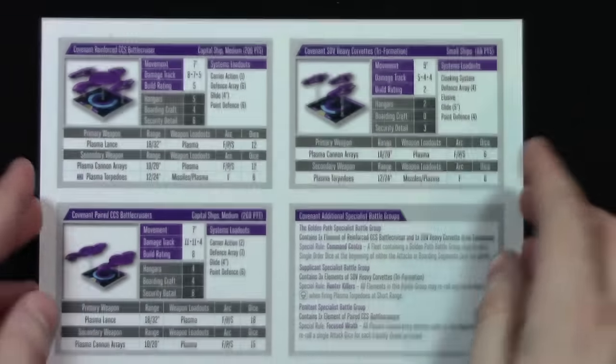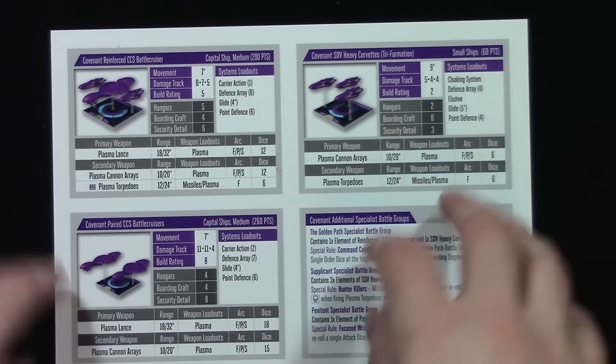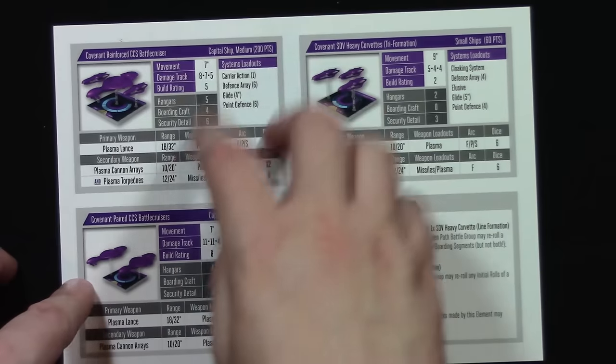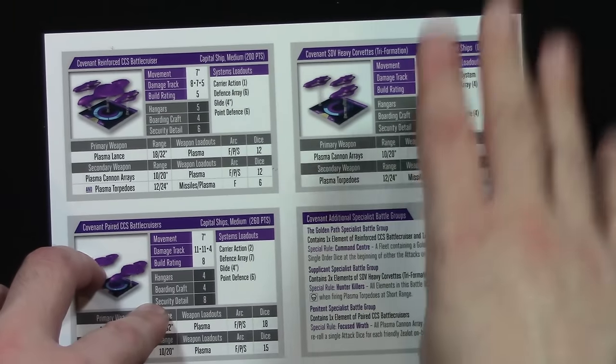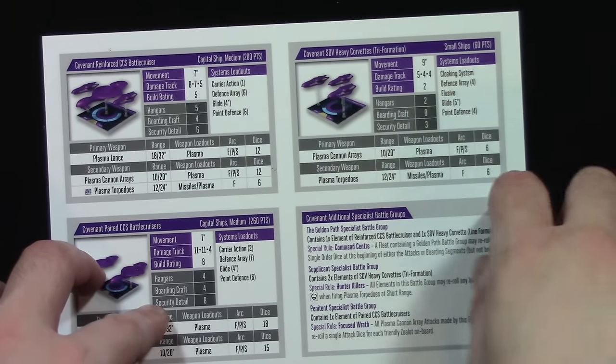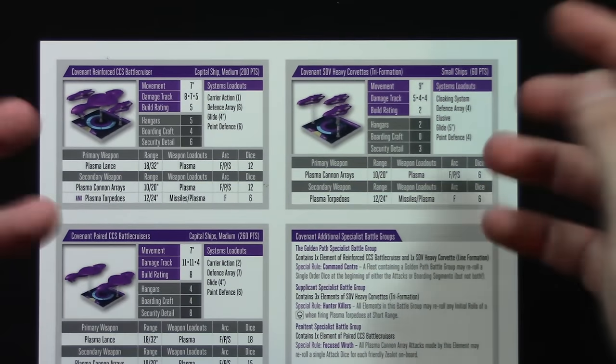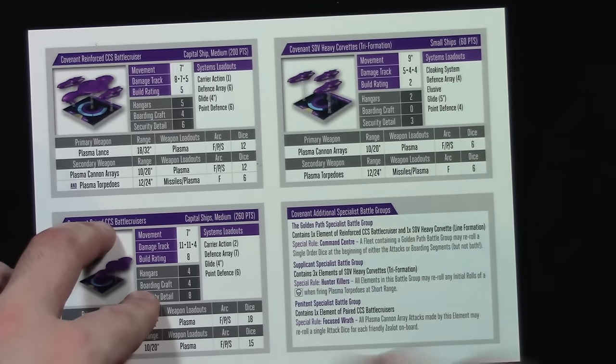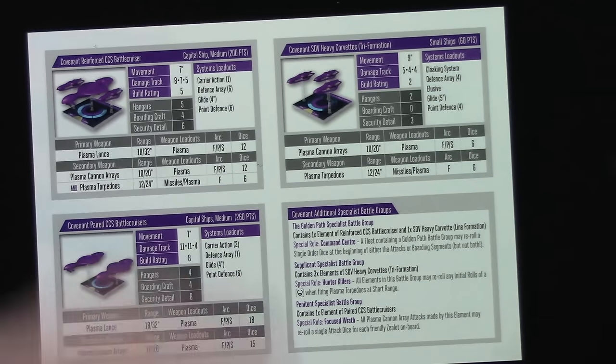And you also get some ship stats as well. So on the one side, here we've got the new formations that come in this box. So you've got the Covenant reinforced CCS Battlecruiser, the Covenant paired CCS Battlecruiser and the Covenant STV Heavy Corvettes in Triformation. Or if you're used to UNSC Trident, but in here for the Covenant they're called Triformation. And some info on the specialist battle groups and the rules and what they do.